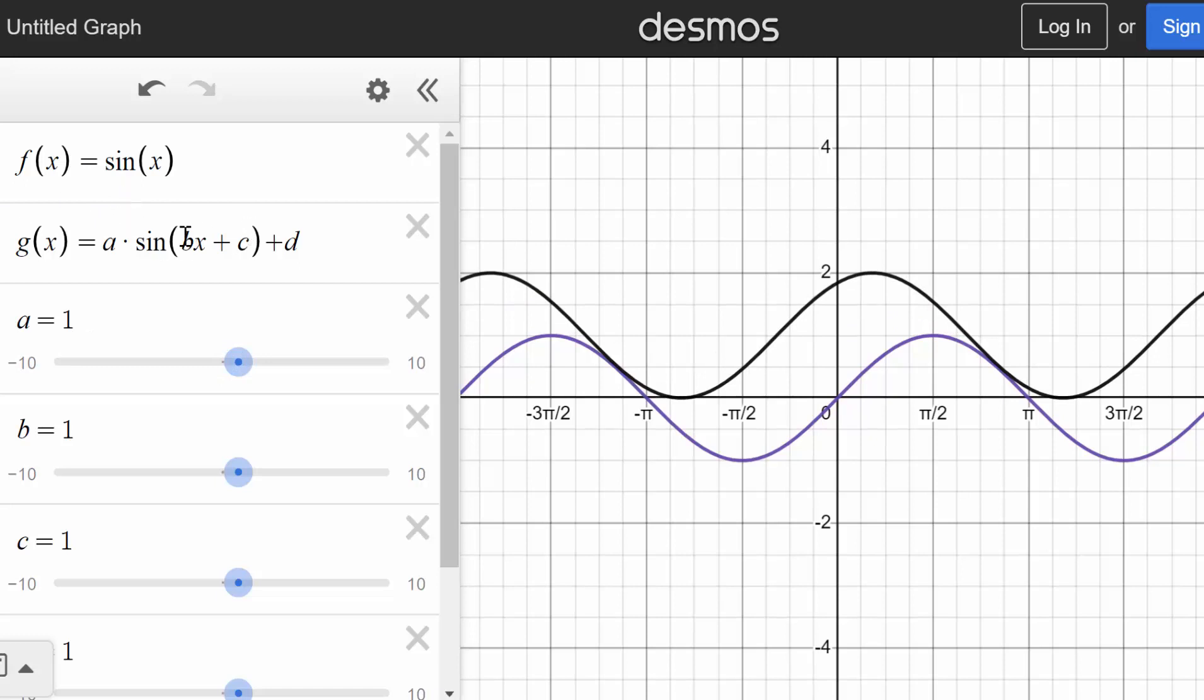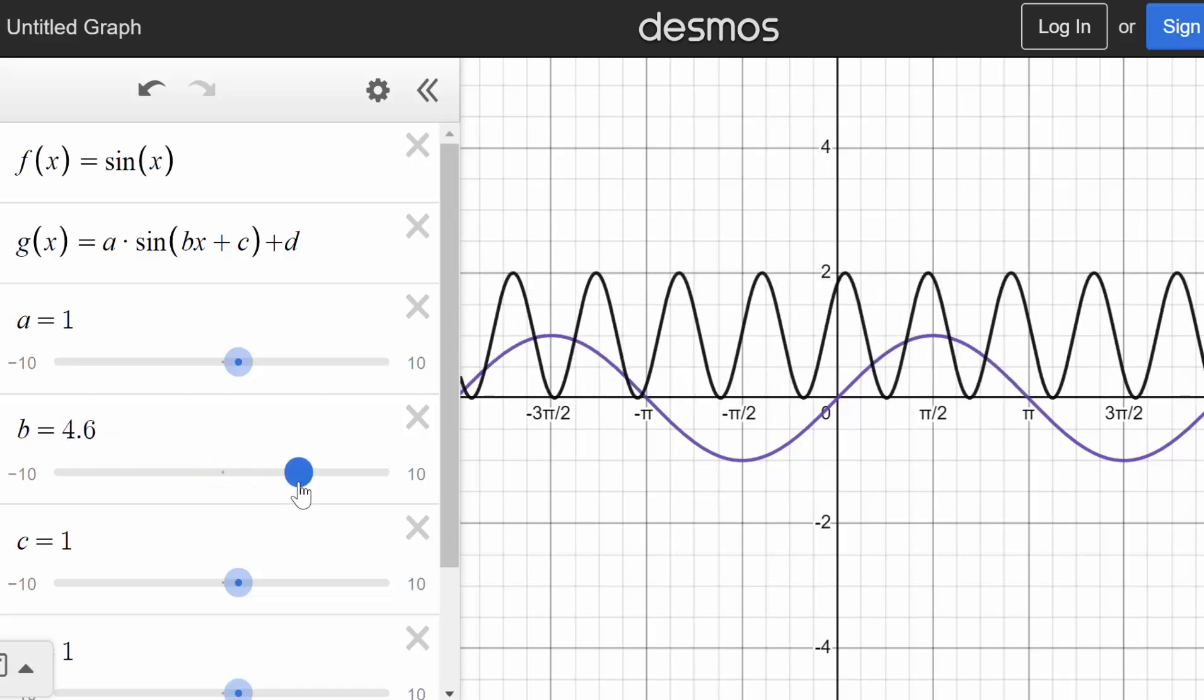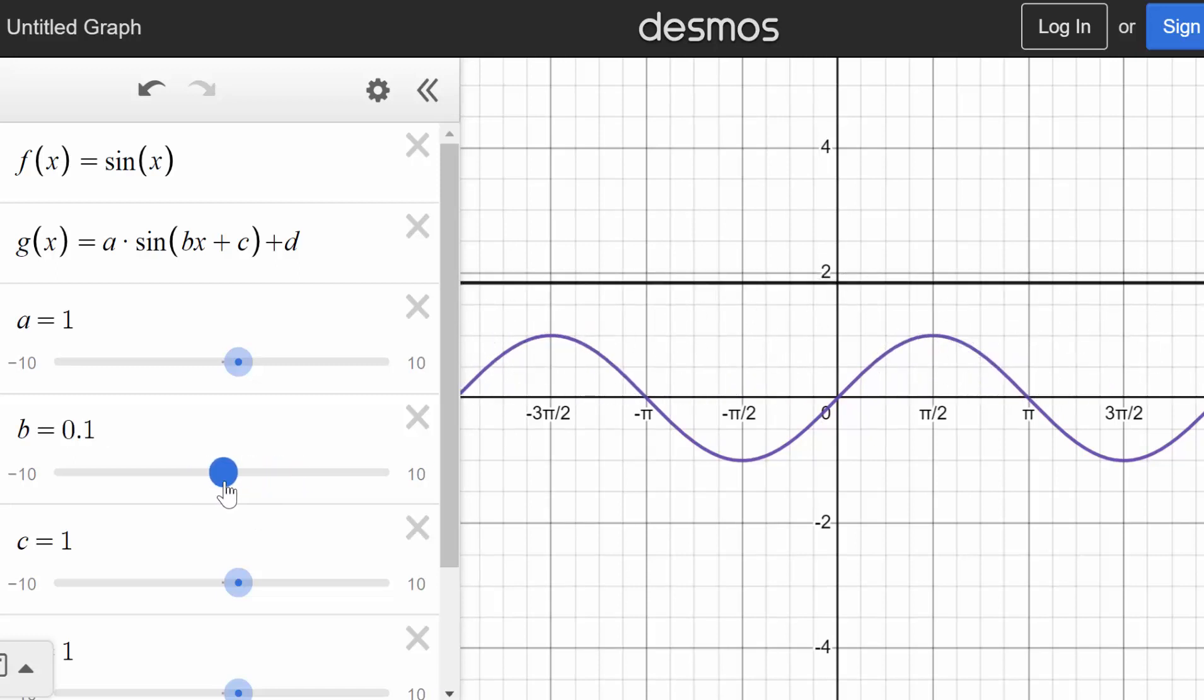And b deals with the period or deals with horizontal stretching or shrinking or compression. And for our parent function, b is 1. But we can see that if we change b, we essentially squish or stretch out the function. But let's look at our parent function when b is 1.